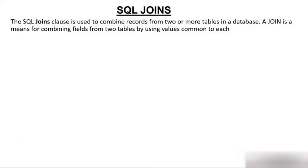Why do you join something? Because you need information not from a single table. You need information which is a collection gathered from more than one table. A join is a means for combining fields from two tables by using values common to each other. We join tables on the basis of some common values.